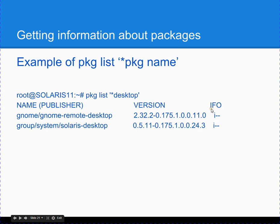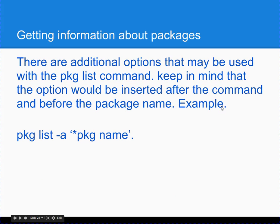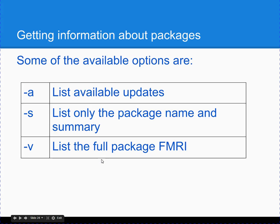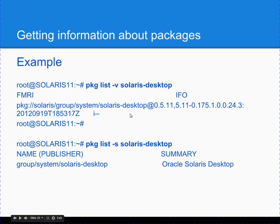You should notice there's a column called IFO: I means the package is installed, F means the package is frozen, and O means the package is obsolete. There are additional options you can use with the PKG list command. These options are -a, -s, and -v. -v retrieves the Fault Management Resource Identifier, -s lists only the package name and a summary, and -a lists all available updates. Here's an example of the different options.